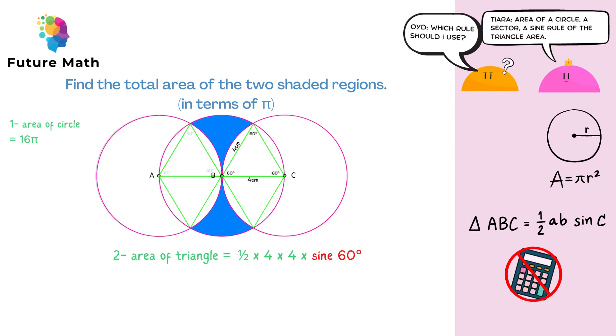And because it is a non-calculator paper, you need to memorize the value of sine 60, which is root 3 over 2. So, the area of one triangle is equal to half times 4 times 4 times root 3 over 2, and this comes out as 4 root 3.